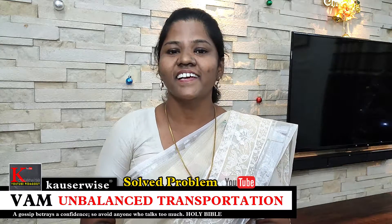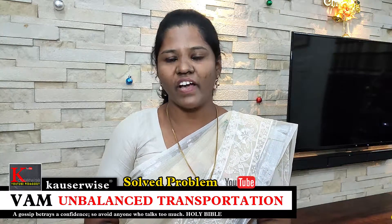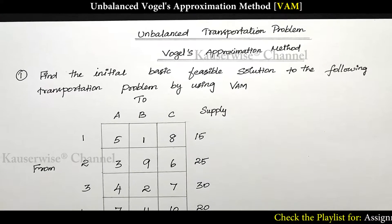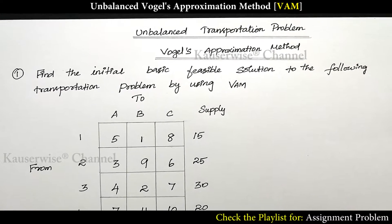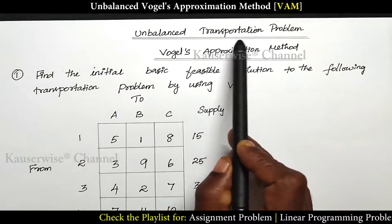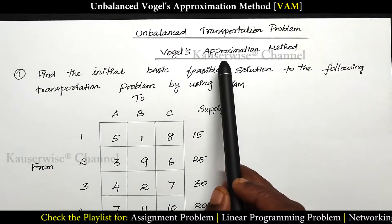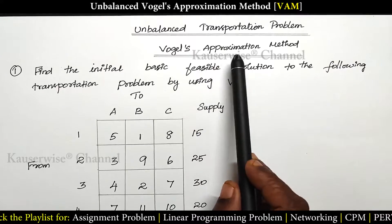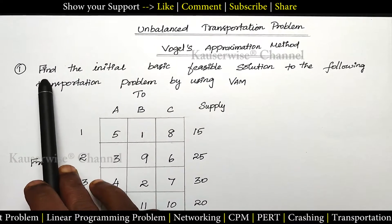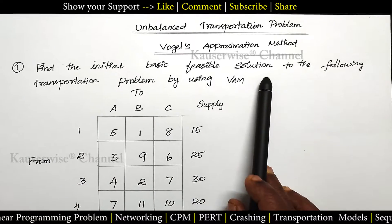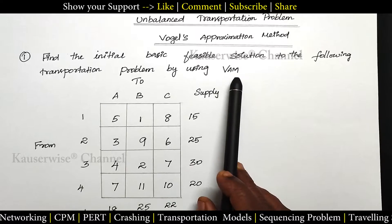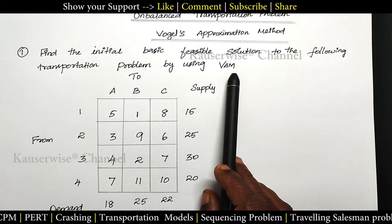Hi, welcome to my channel. This is Kauser Weiss and this is the continuation video of transportation model. You can find the playlist link in the description box. In this video we are going to solve an unbalanced transportation problem by using VAM method, that is Vogel's Approximation Method. Now let's see the problem: find the initial basic feasible solution to the following transportation problem by using VAM.